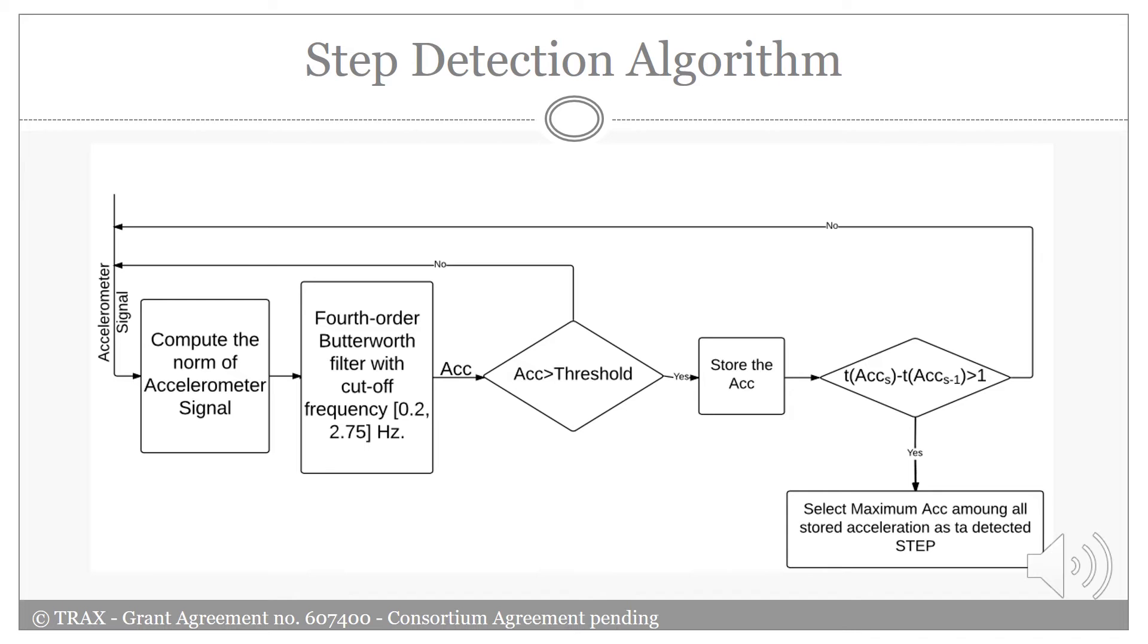a Butterworth bandpass filter with a proper cutoff frequency is applied to attenuate all frequencies outside the bandpass. If the filtered signal exceeds a defined threshold, a step is considered detected. Among all sets of accelerations that are larger than the threshold before the signal again drops below the threshold, the one with the highest value is selected as the step. The output of this flowchart is the detected step.